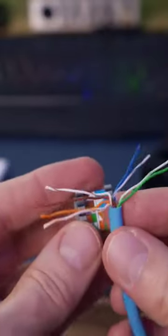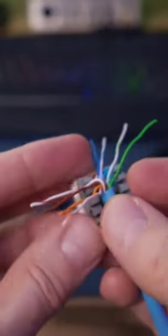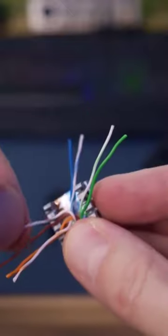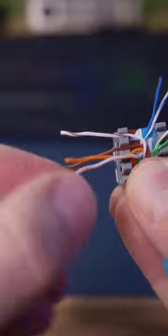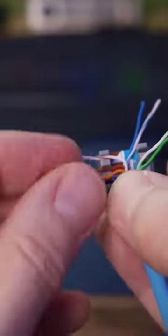And now you're ready to insert all eight wires into the Cat6 wall jack. Make sure to push the wires down as far as possible using your fingers.